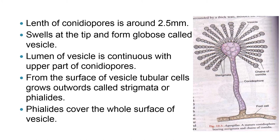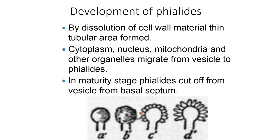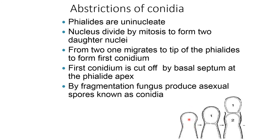From the surface of the vesicle, tubular cells grow outward called sterigmata or phialides. These phialides cover the whole surface of the vesicle. The phialides are produced by dissolving the cell wall material to form thin tubular areas. The cytoplasm, nucleus, mitochondria, and other organelles migrate from the vesicle into the phialides. At maturity, the phialides are cut off from the vesicle by a basal septum. The phialides are uninucleated; the nucleus divides by mitosis to form two daughter nuclei. One nucleus migrates to the tip of the phialide and forms the first conidium, which is cut off by a basal septum. By this fragmentation, the fungus produces asexual spores known as conidia.